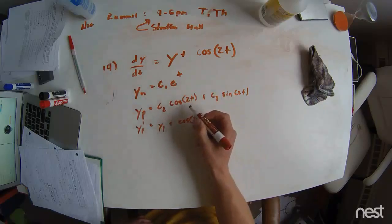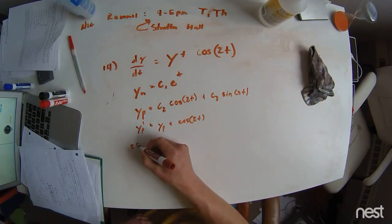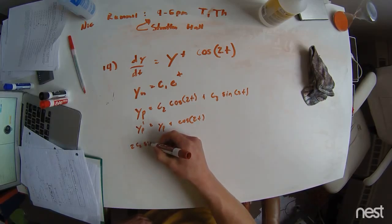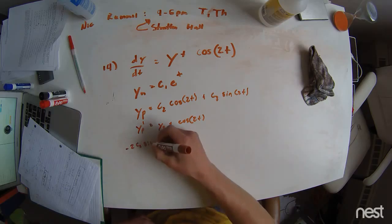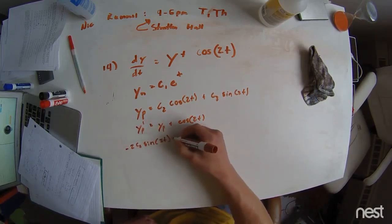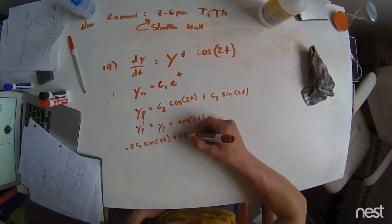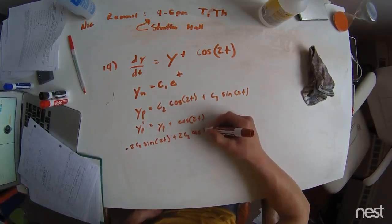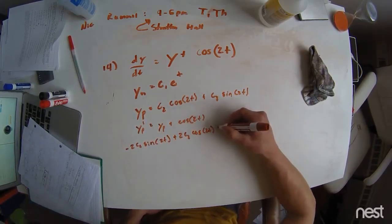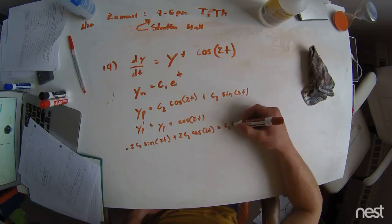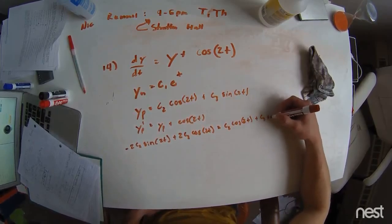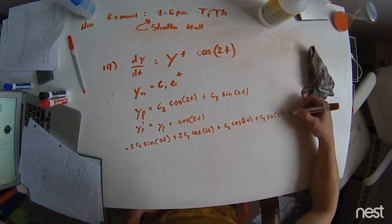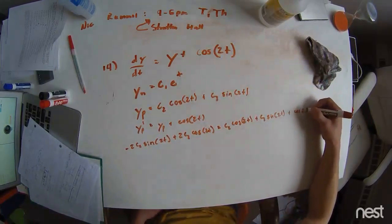We take the derivative and we see that we have negative 2 c2 sine of 2t plus 2 c3 cosine of 2t. And then this is equal to y particular, so this is c2 cosine of 2t plus c3 sine of 2t, plus the cosine of 2t term from up here.